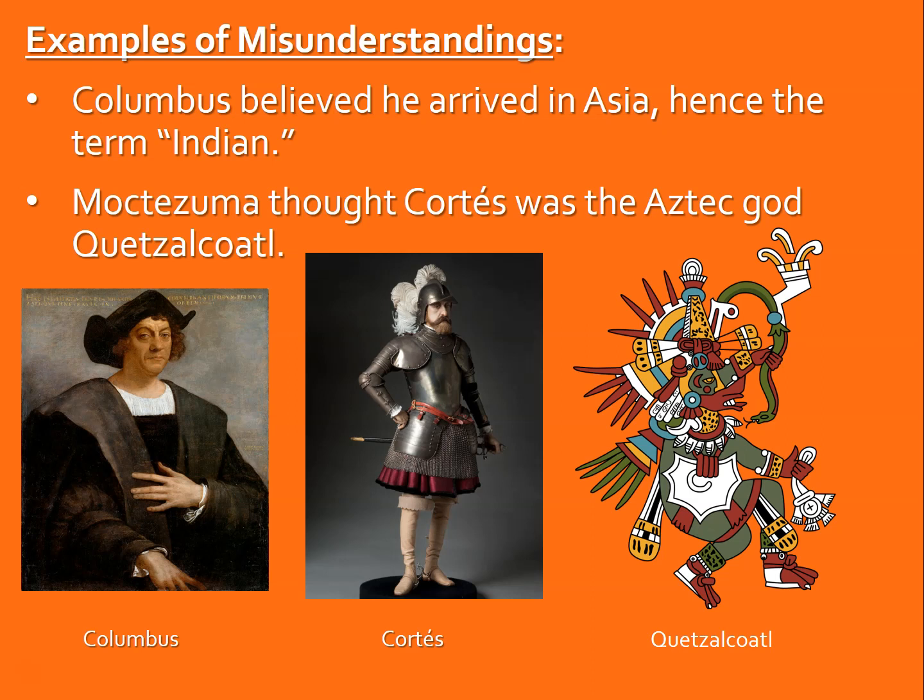Two quick examples: the term 'Indian' comes from Columbus and early explorers who believed they were in East Asia, in the Indies, and called the people there Indians. Another example is Moctezuma, the last Aztec emperor. When Hernan Cortes, a Spanish conquistador, arrived in modern-day Mexico, Moctezuma was under the impression that Cortes might be the god Quetzalcoatl — who was supposed to arrive from the east — due to his shiny armor, white skin, horses, and loud guns. These early meetings often came with misunderstandings, sometimes resolved peacefully, sometimes violently.